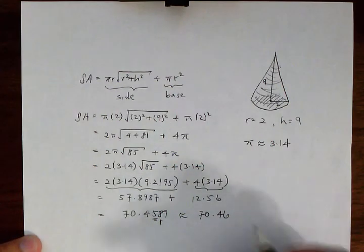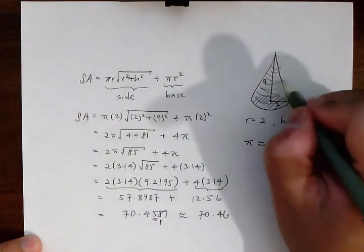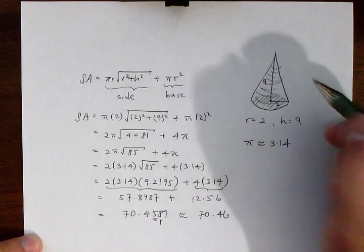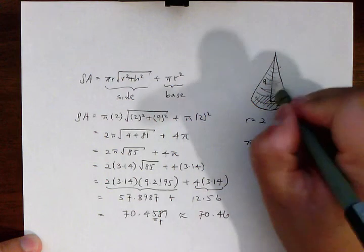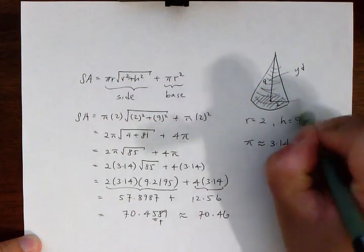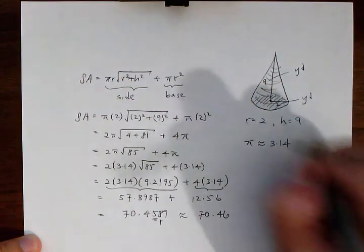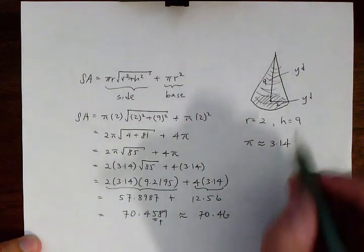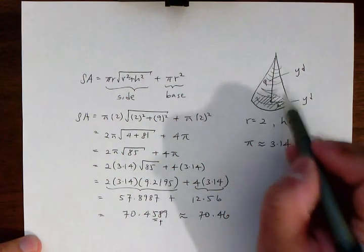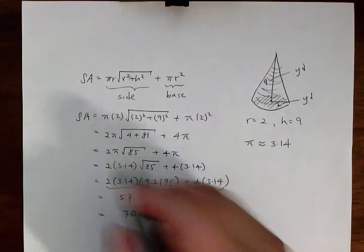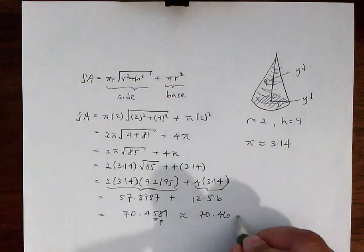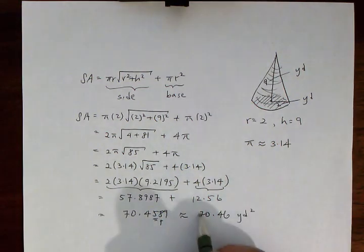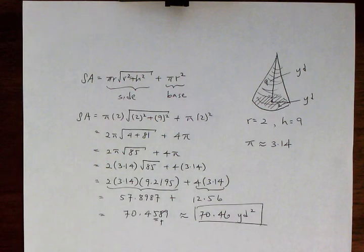The original problem was given to us as nine yards and two yards, so the dimensions of the cone are in terms of yards. The surface area is a two-dimensional unit, so it's going to be yards squared. That is our answer.